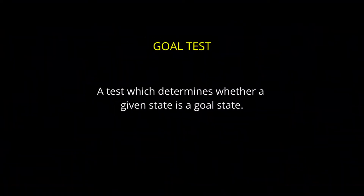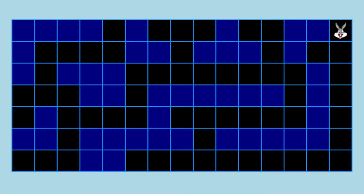The goal test is a test which determines whether a given state is a goal state. In our example system, the goal test is to check: is Bugs Bunny inside the same black block in which we hid the carrot? If this is true, then the state is the goal state.